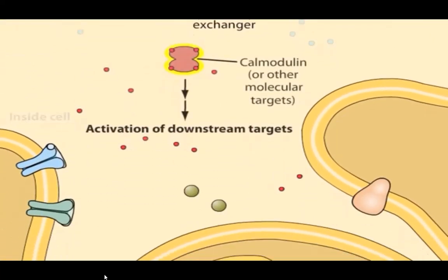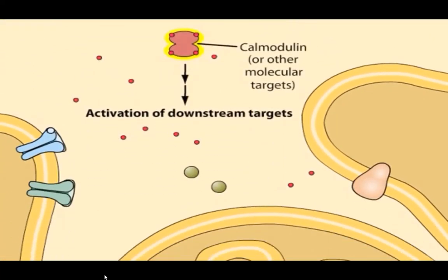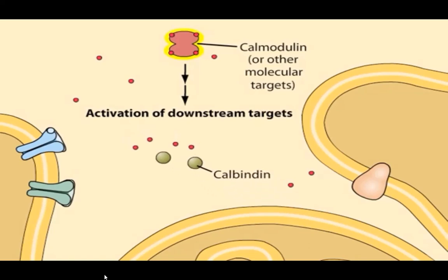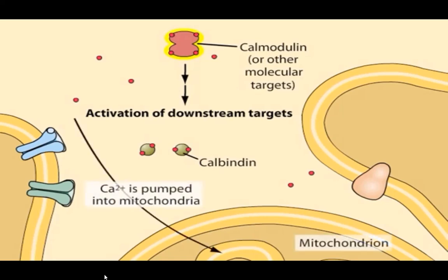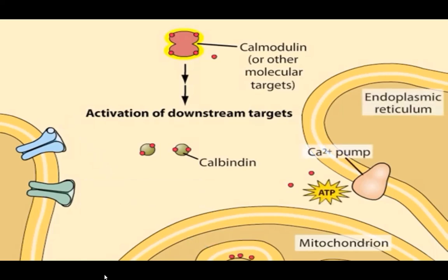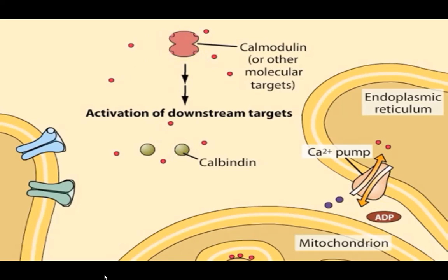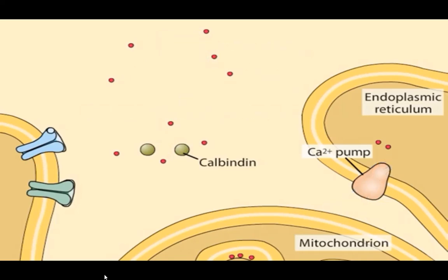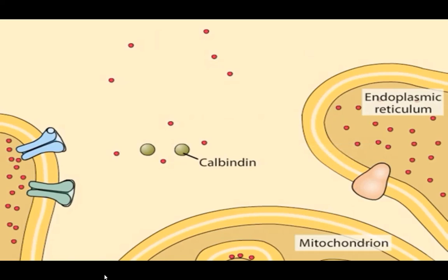When calcium levels rise within the cell, a variety of calcium-binding proteins, in addition to calmodulin, bind to the calcium. One other example is calbindin, which serves as a calcium ion buffer. It reversibly binds calcium and thus blunts the magnitude and kinetics of calcium signals within neurons. Calcium ions are also pumped into the cell's mitochondria and endoplasmic reticulum. The endoplasmic reticulum uses a calcium pump similar to that in the plasma membrane. As calcium levels fall, the signaling systems return to their resting state.